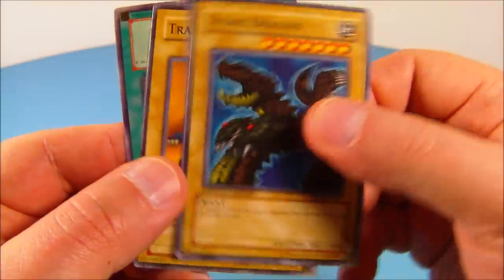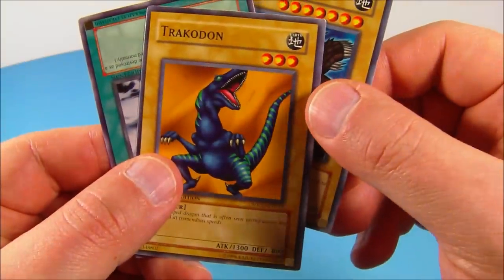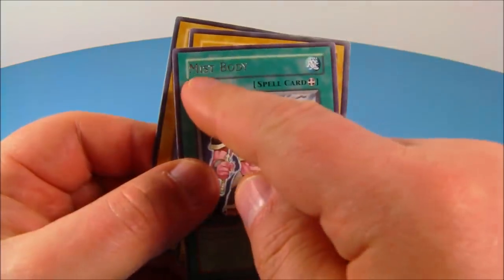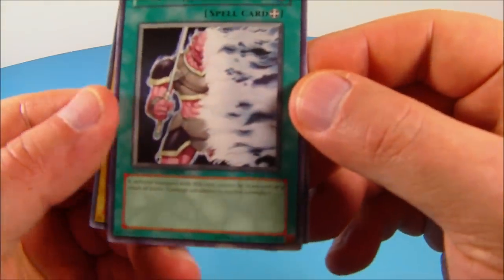And then here is the Stone Dragon card. The Trachodon card. And then I'm assuming this is the rare card because it's a different color and it has the silver foil on it. And this is the spell card.